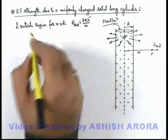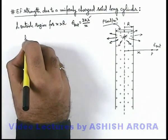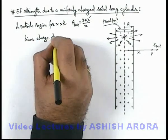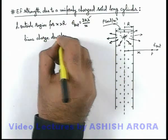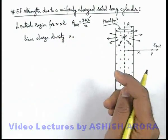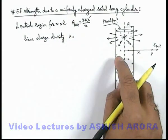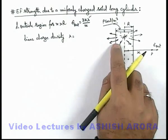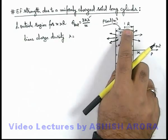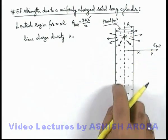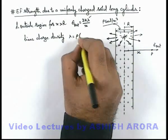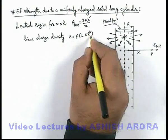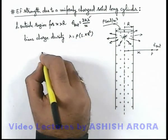In this situation we can say linear charge density λ we can calculate by the total charge on the unit length of the cylinder. The area of cross section of the cylinder is πR², then on unit length the charge will be ρ multiplied by 1 into πR². So this will be ρπR².